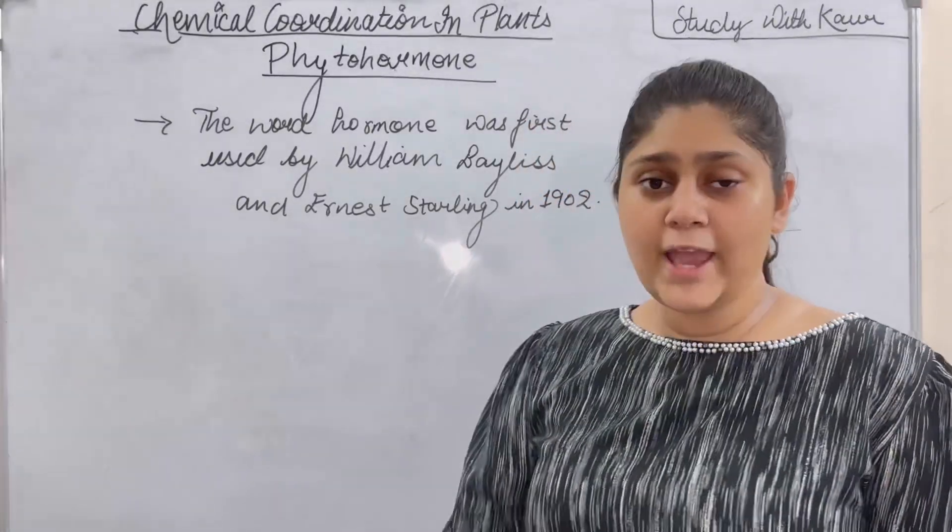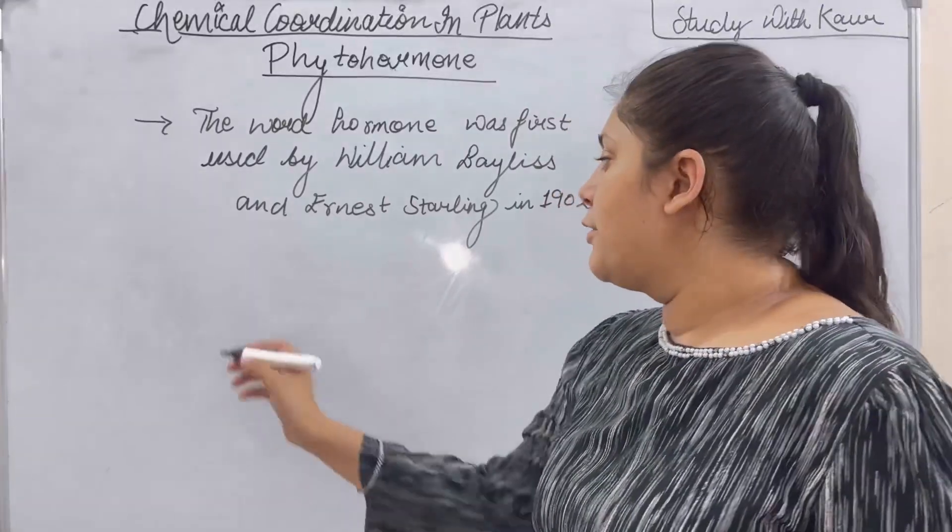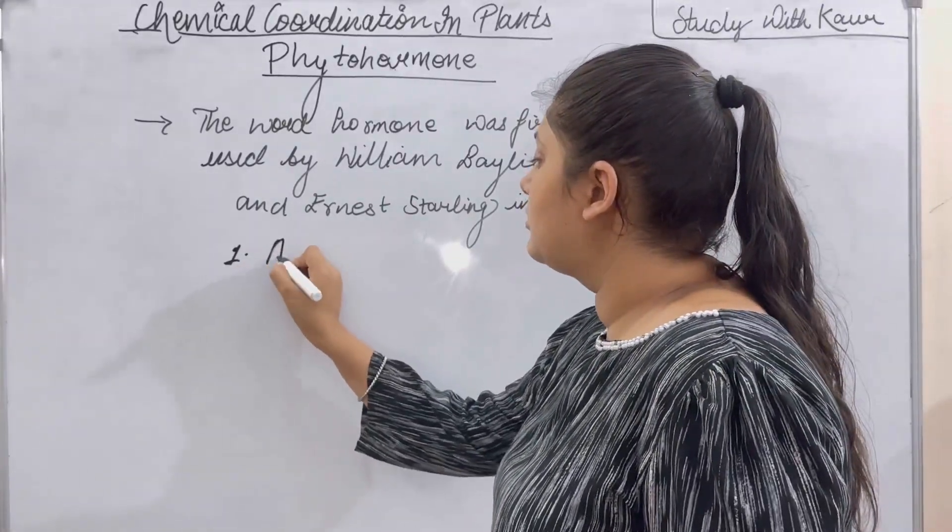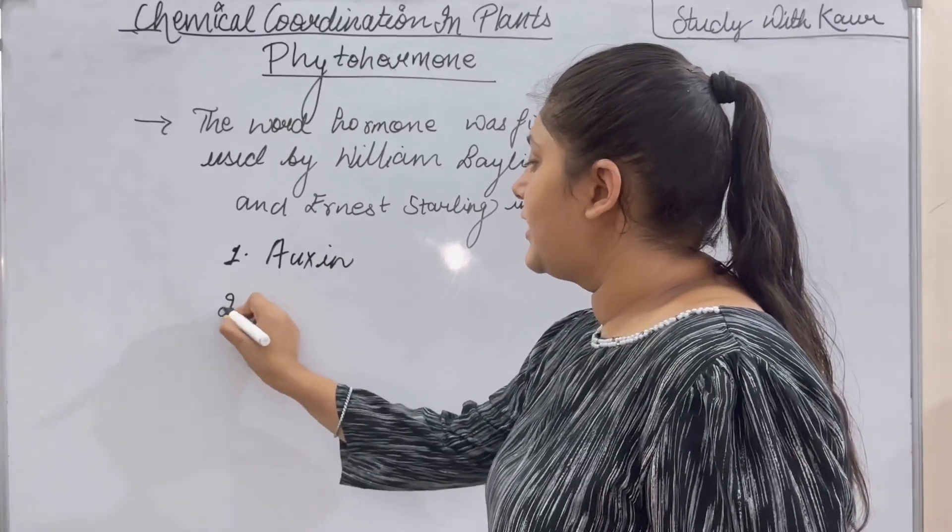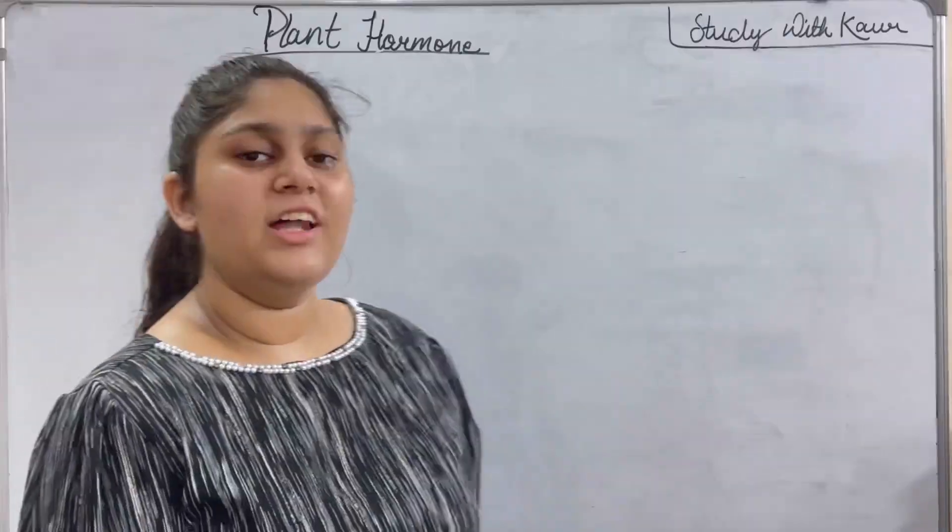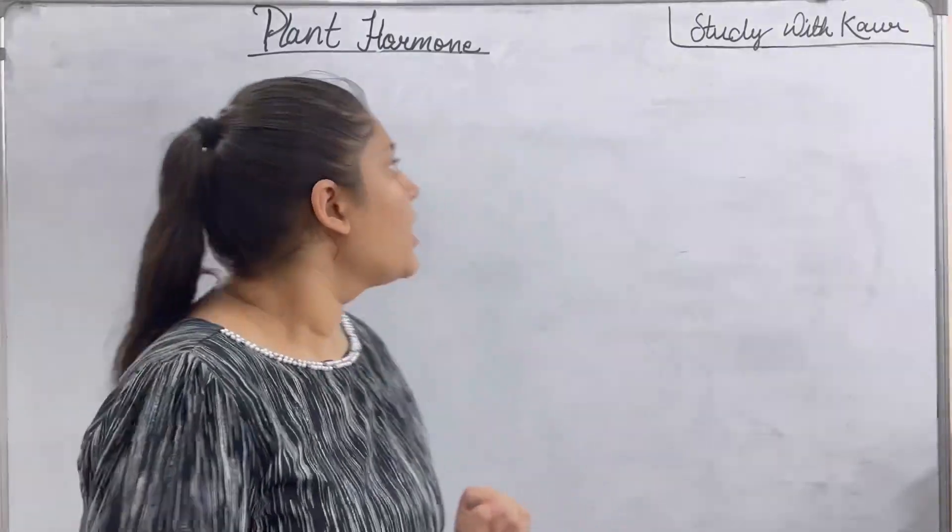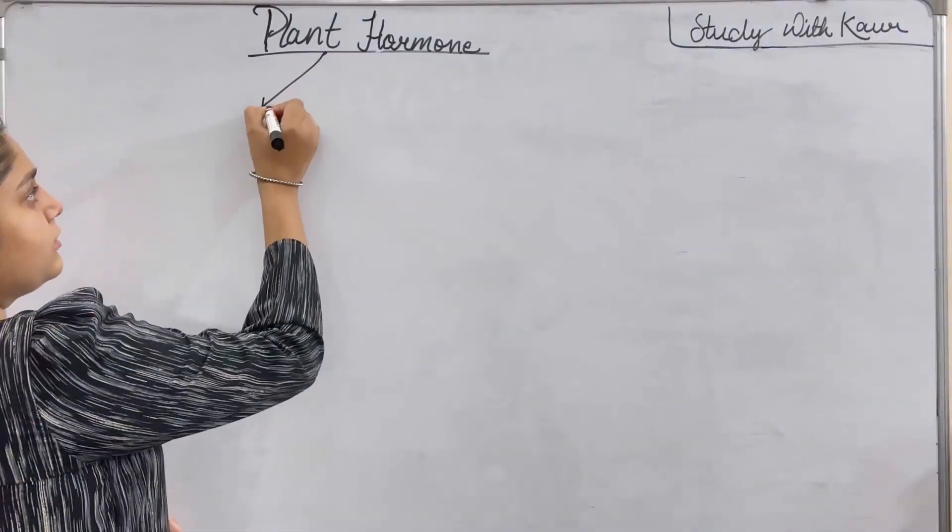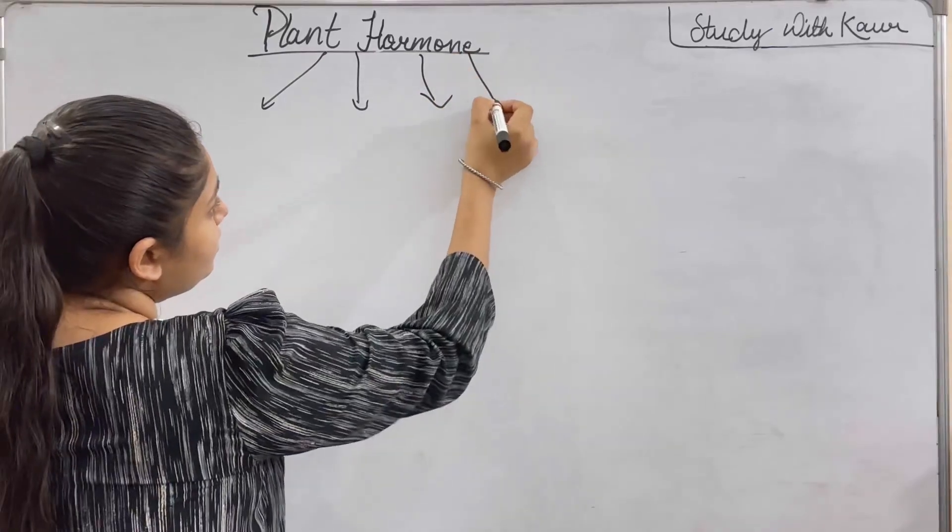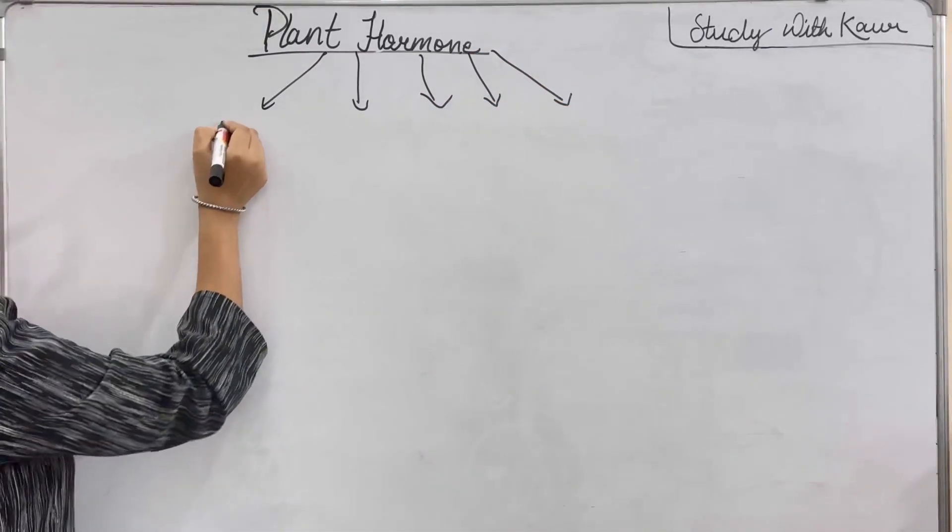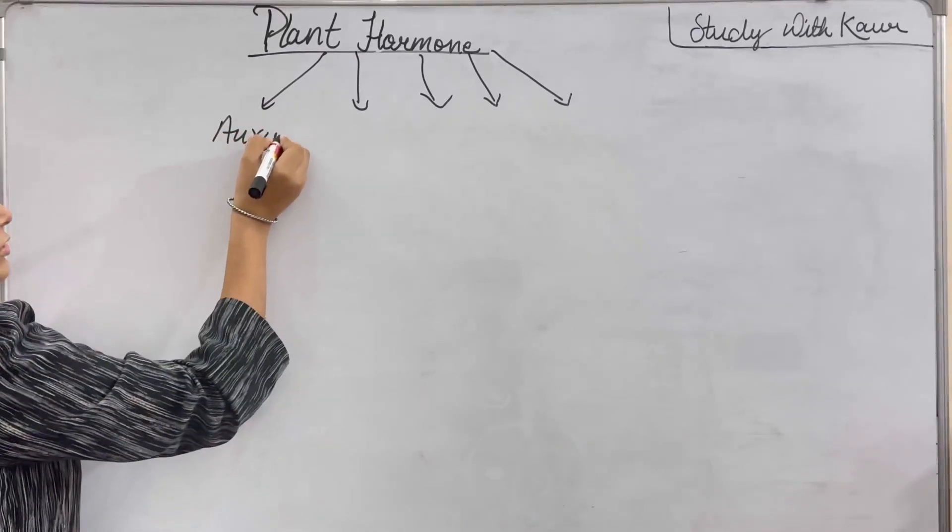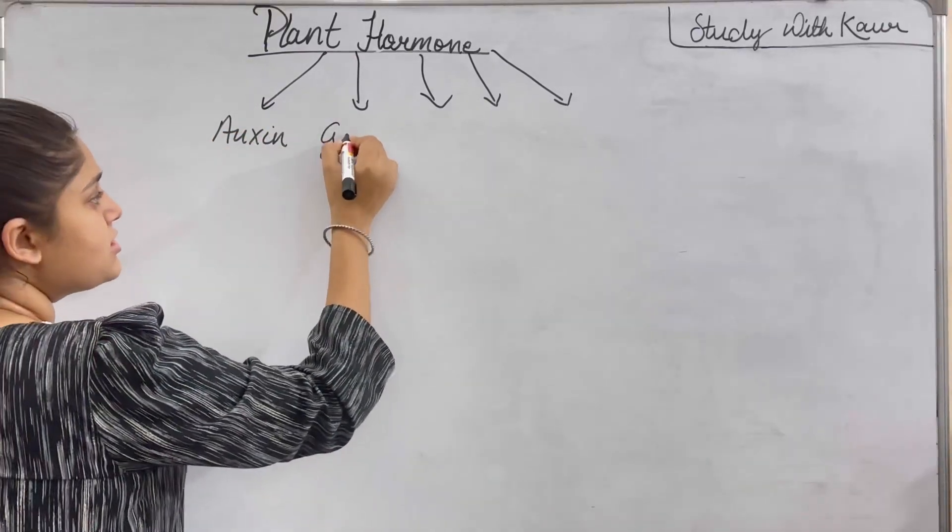And there are actually five types of plant hormone. The first one is auxin. Second is gibberellin. There are five plant hormones. The first plant hormone is auxin. Then it's gibberellin.